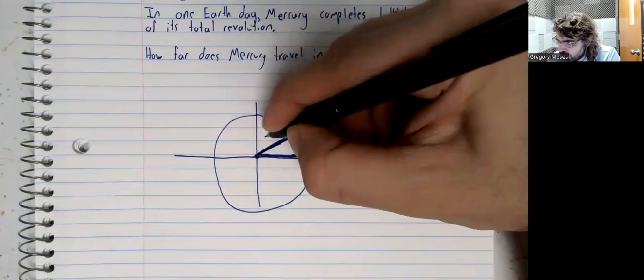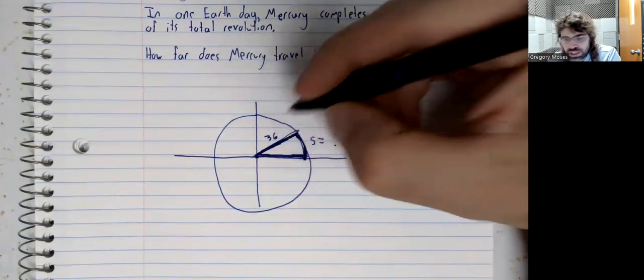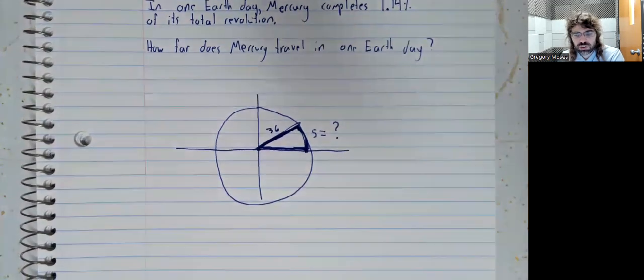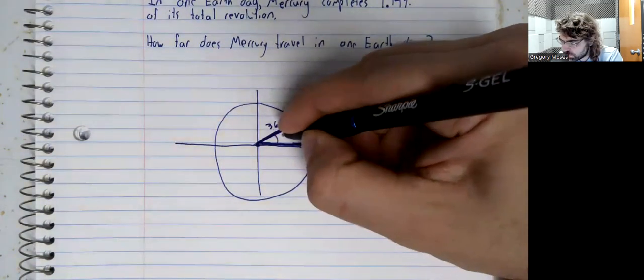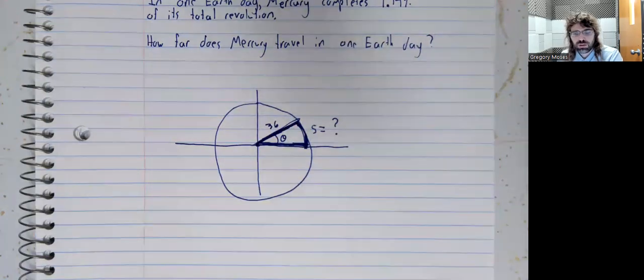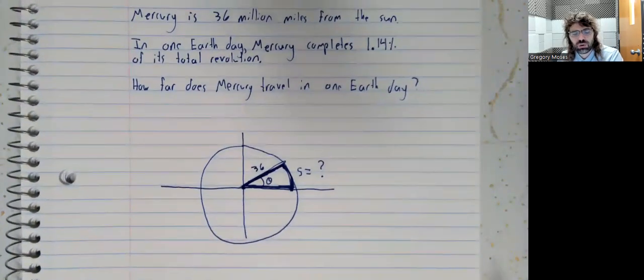And we know that the radius is 36. What about this angle theta?